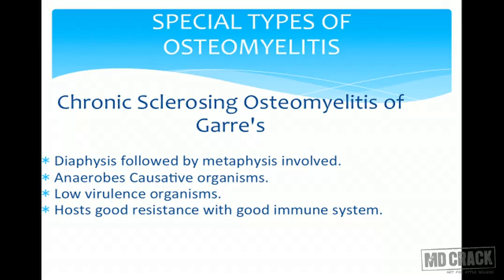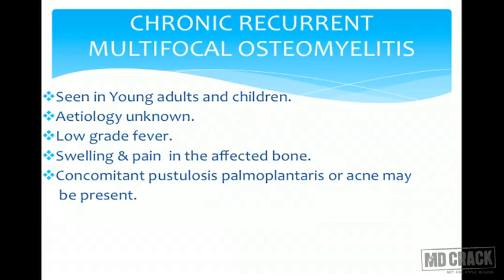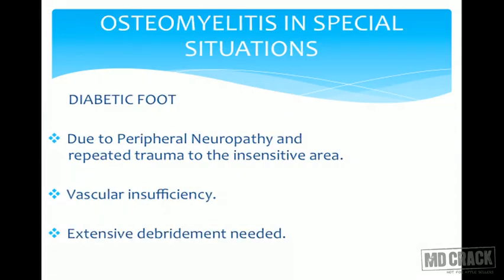Special types of osteomyelitis include: chronic sclerosing osteomyelitis of Garre — affecting the diaphysis followed by the metaphysis, caused by low-virulence anaerobic organisms, with good host immunity. Chronic recurrent multifocal osteomyelitis is seen in young adults and children; etiology is unknown, with low-grade fever, swelling, and pain in the affected bone. Concomitant pustulosis of palms and soles or acne may also be present.